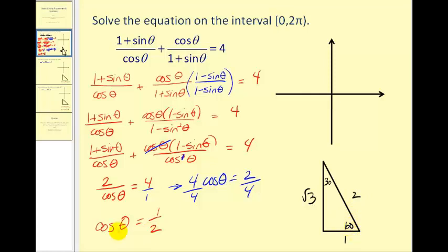Next, cosine theta is positive in both the first and the fourth quadrant, since cosine theta involves x. So let's go ahead and sketch a 60 degree reference angle in the first and the fourth quadrants.